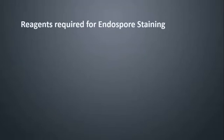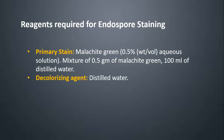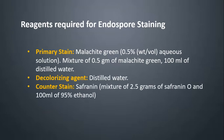Reagents required for Endospore Staining: Primary stain — malachite green, 0.5% aqueous solution (0.5 g of malachite green in 100 mL of distilled water). Decolorizing agent — distilled water. Counter stain — safranine, a mixture of 2.5 grams of safranine and 100 mL of 95% ethanol.